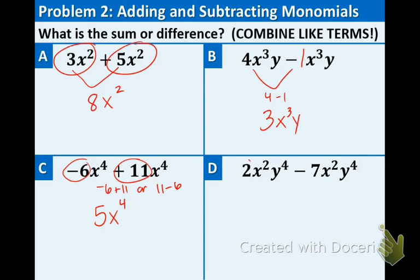And lastly, we have 2 minus 7. That would give us a negative 5, and then you rewrite the x squared y to the fourth. So, when we are combining like terms, just look at the numbers in front, called the coefficients, and add as they tell us to do, and then just rewrite the variable after.